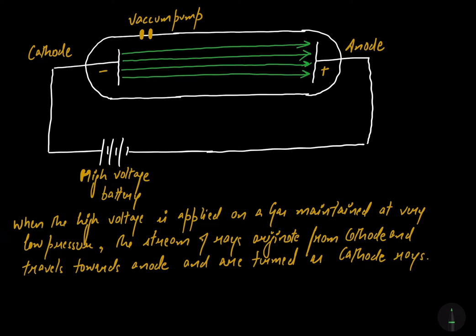To summarize Julius Plucker's experiment: he applied a high voltage across a gas maintained at a very low pressure of 10⁻⁴ atmospheres, due to which the gas became conducting. This is proved by the emission of rays originating from cathode traveling towards anode. The vacuum pump's role is to drain out all air in the discharge tube to maintain that low pressure. Now let's study some characteristics of these cathode rays.